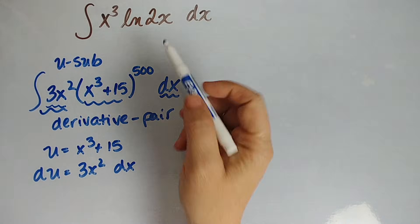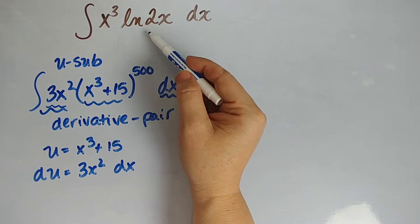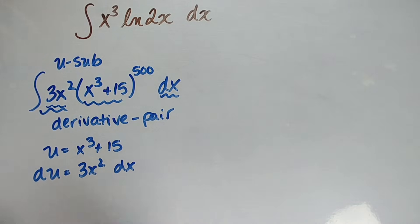So this, I see natural log of 2x. I know natural log, derivative 1 over x, this is x cubed. I don't see a derivative pair. So u-substitution is just not going to work here.